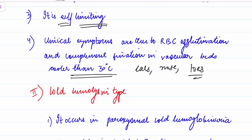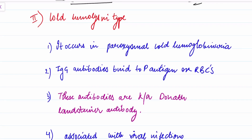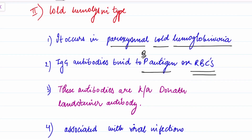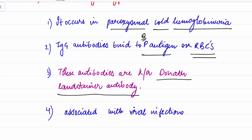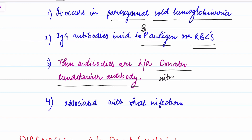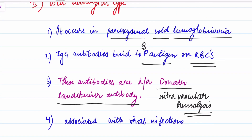Cold hemolysin type occurs in paroxysmal cold hemoglobinuria. IgG antibodies bind to the P antigen on RBCs. These antibodies are known as Donath-Landsteiner antibodies. They result in intravascular hemolysis and hemoglobinuria due to complement-mediated destruction of RBCs, and are associated with viral infections.